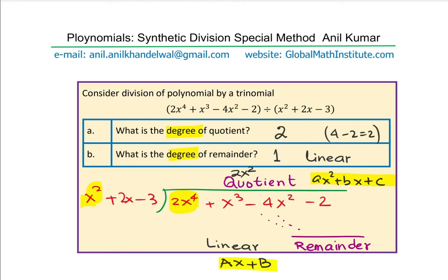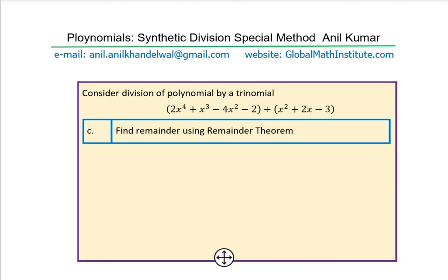Now let's move on to how we find the remainder when dividing the degree-4 polynomial by a degree-2 polynomial using the remainder theorem — without doing long division. We can write a division statement and find it. Note that x squared plus 2x minus 3 can be factored as x plus 3 times x minus 1.